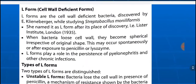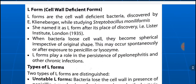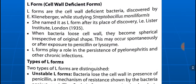L forms are cell wall deficient forms. They were discovered at the Lister Institute, London, which is why they are named L forms. They were discovered by Klieneberger, a lady who was studying Streptobacillus moniliformis.